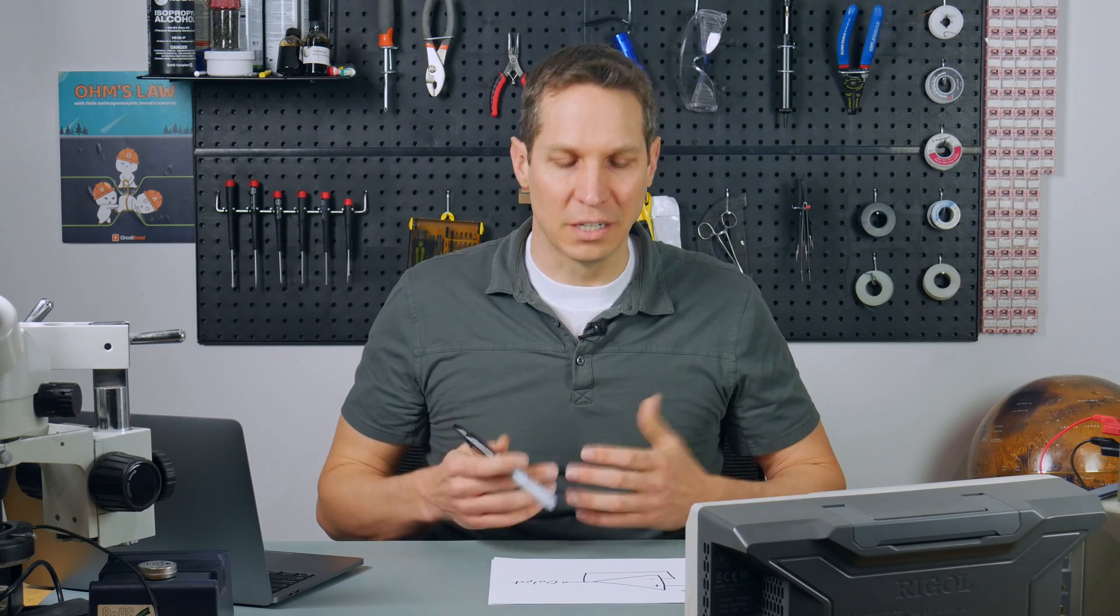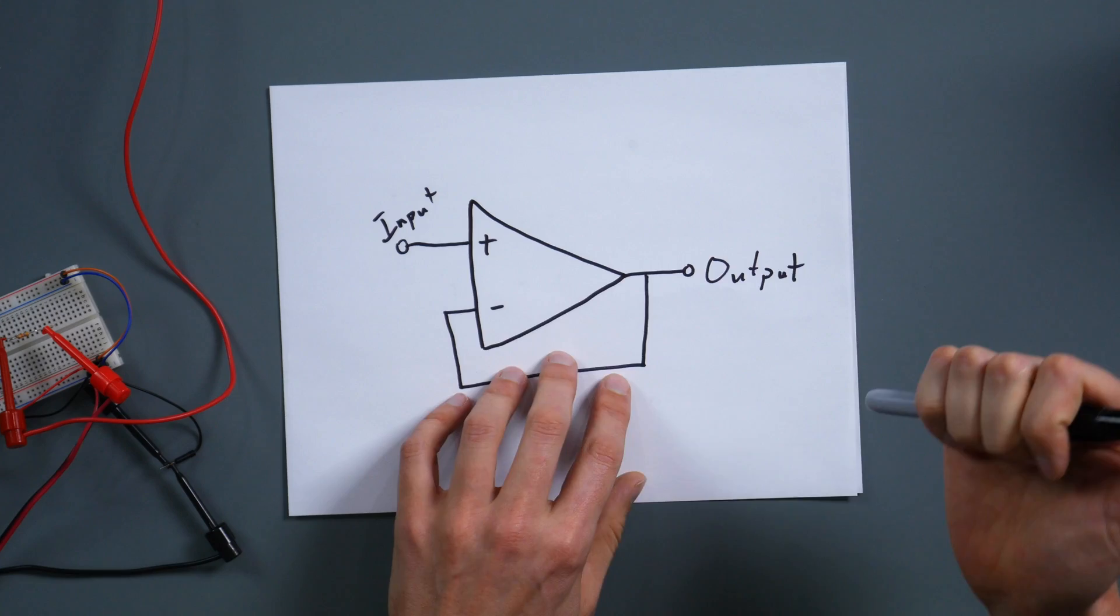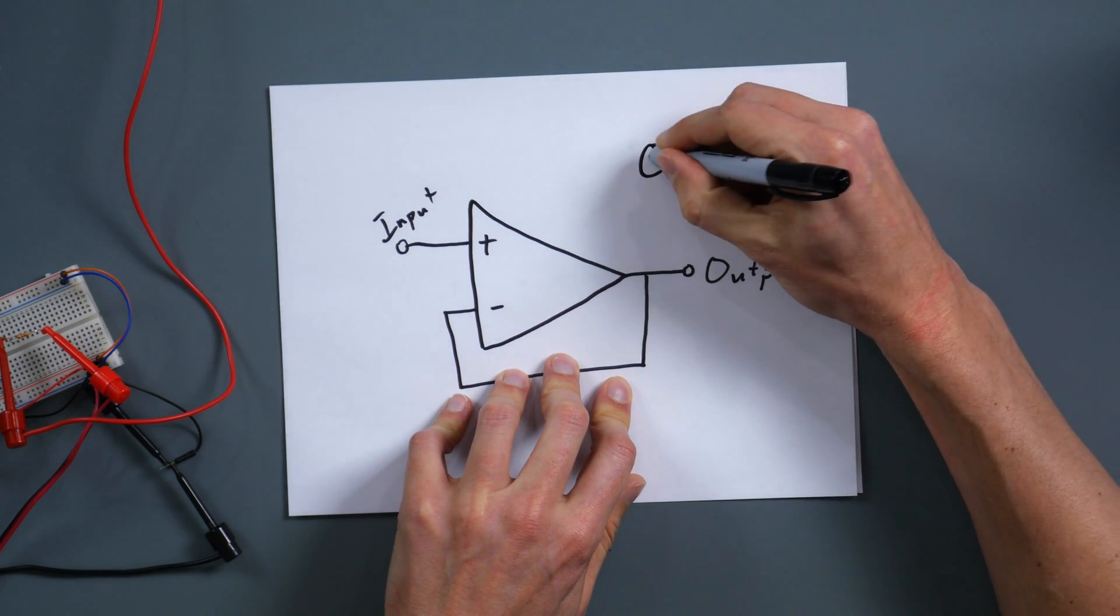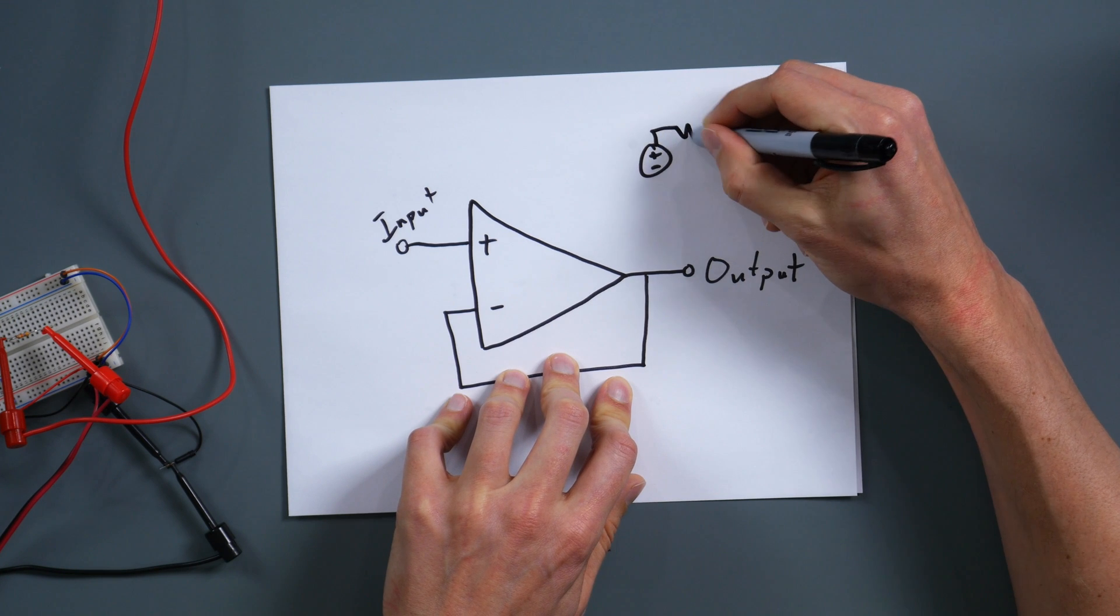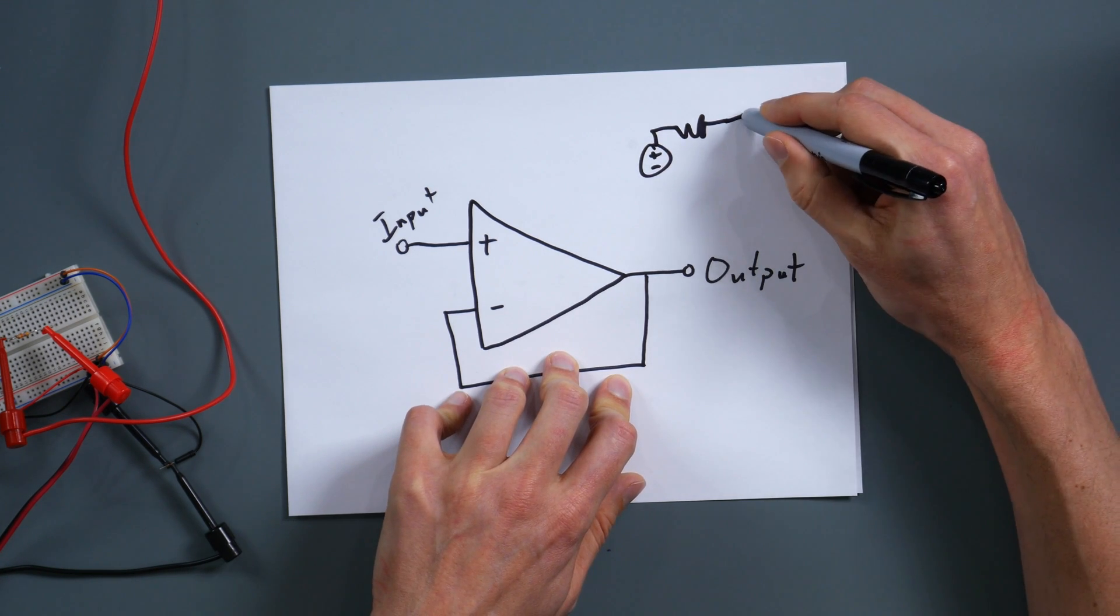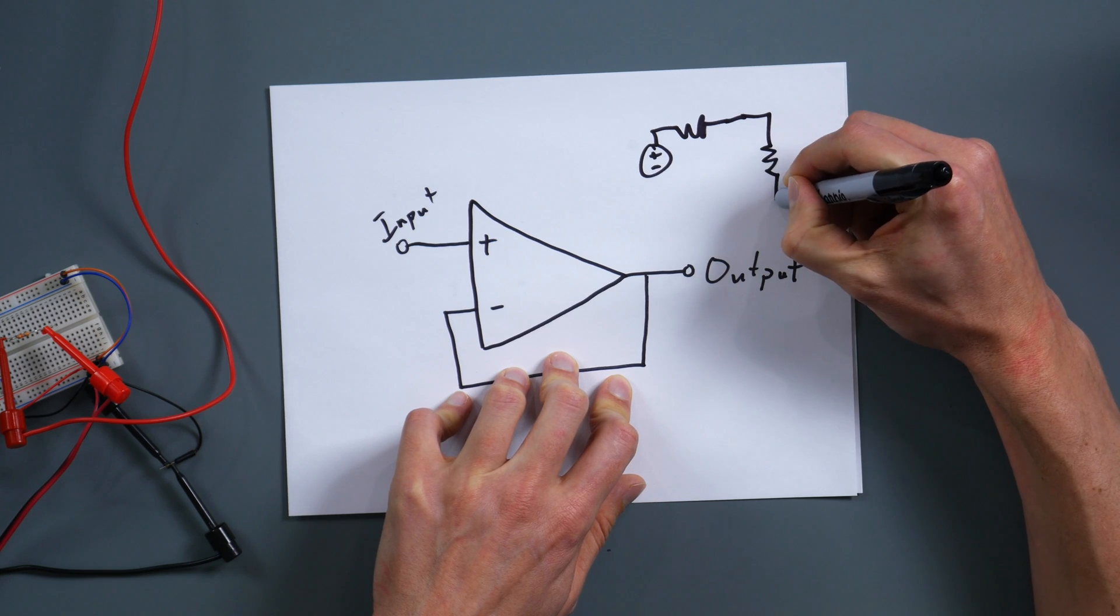So what happens is sometimes you have a voltage source that just cannot produce very much current. And it's modeled basically as if you have like a voltage source, and then you have a very large resistor. And then you have your load right there.